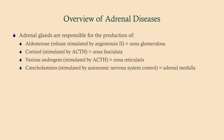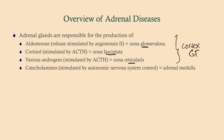The adrenal glands are responsible for production of a number of things. First of all, we have an adrenal cortex, which is on the outside, and an adrenal medulla, which is on the inside. The adrenal cortex can be divided up into three layers: glomerulosa, fasciculata, and reticularis — GFR.